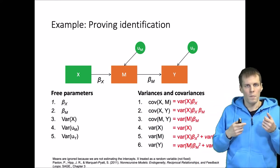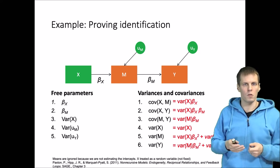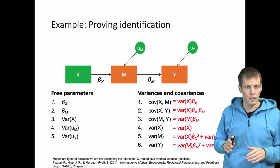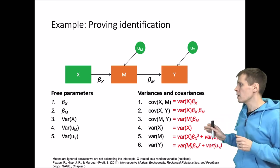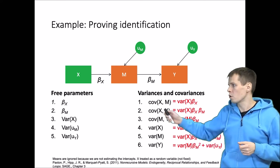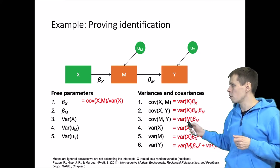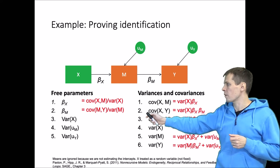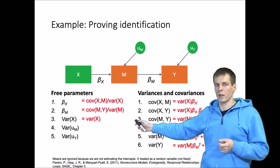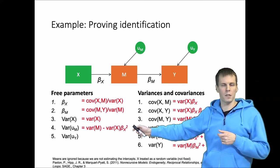High school math tells us that this is an overdetermined system because we have six equations with five unknowns, and there may not be a solution. We can start solving: beta_X can be solved using the covariance of X and M equation, and beta_M can be solved using the third equation. The variance of X doesn't need to be solved — it's just a sample variance. We can solve for the error term U using the variance of M equation and the value of beta_X that we have already solved.